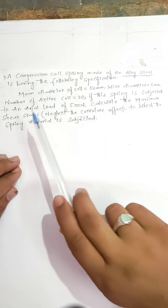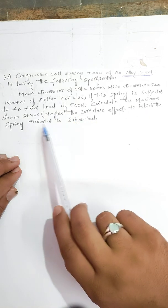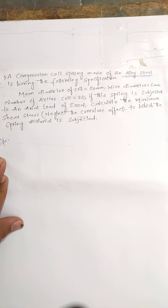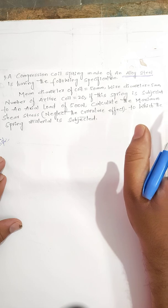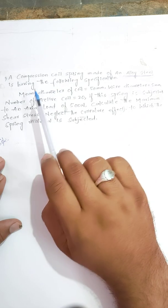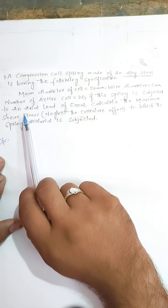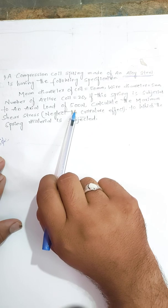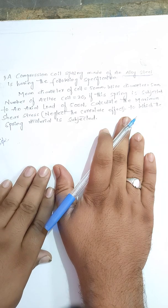We need to calculate the maximum shear stress, neglecting the curvature effect, to which the spring material is subjected. From this question, the compression coil spring is made of alloy steel with mean diameter 50 mm, wire diameter 5 mm, and 20 active coils, with an axial load of 500 Newton acting on it. First, I will draw the figure of the compression coil spring so you can easily understand how to solve the problem.